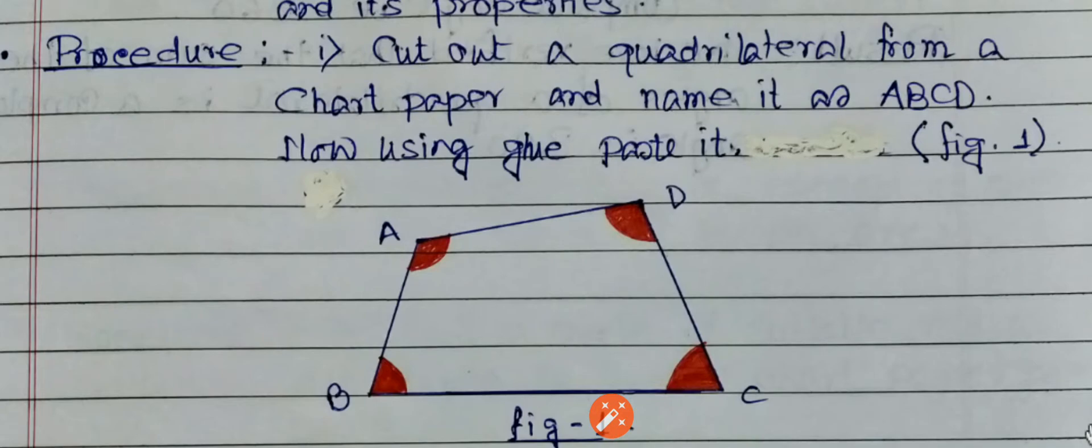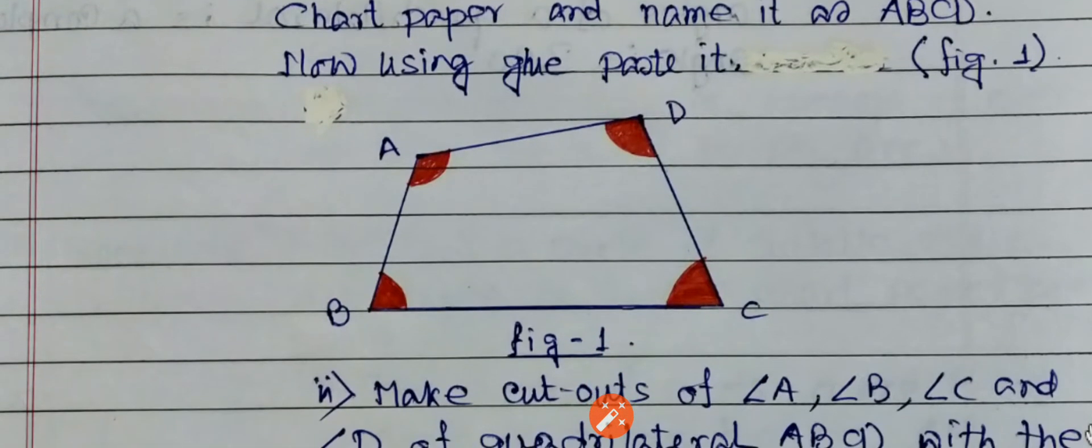Cut any quadrilateral from it and name it as ABCD, and paste it on either A4 size page or on your copy.